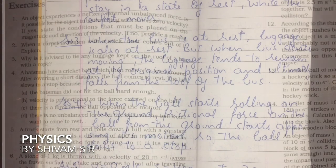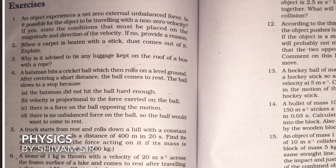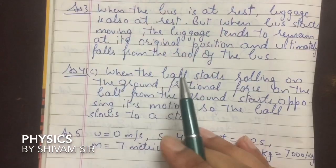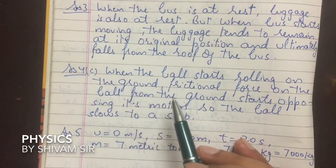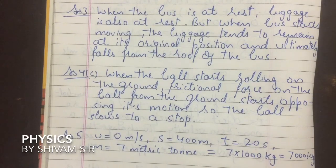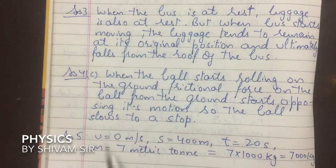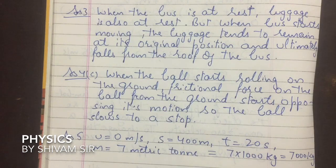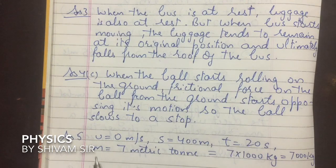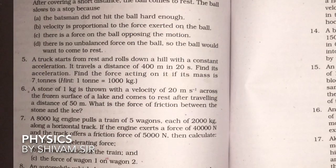Next question: A batsman hits a cricket ball which then rolls on the level ground. When the ball starts rolling on the ground, there is a force acting on it which tends to stop its motion. That force is called the frictional force of the ground. The frictional force from the ground opposes the ball's motion, so the ball slows down to a stop. Option C is correct.